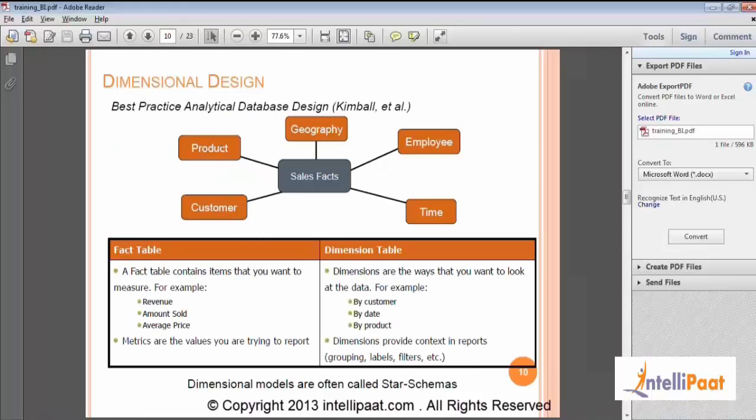So now here we see a logical arrangement of tables. We have one table called sales fact and we have a couple of tables lying attached to it. And the blue table at the center is called a fact table. And the tables which are in orange are the dimensional tables.